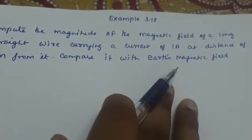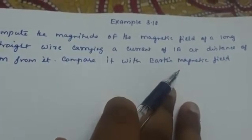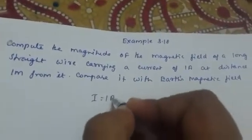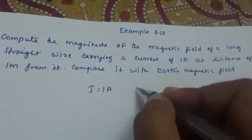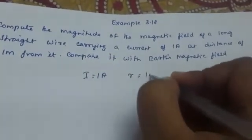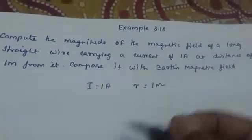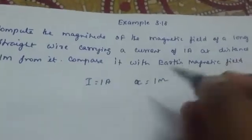What is given here is the current is given as 1 ampere and the distance is given as 1 meter. The distance a is given as 1 meter.